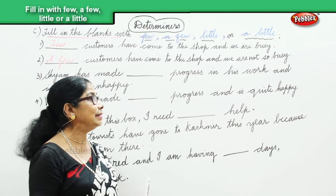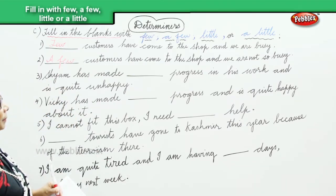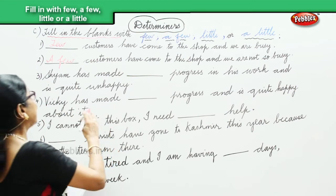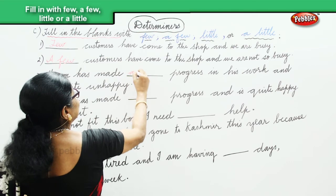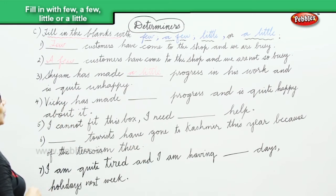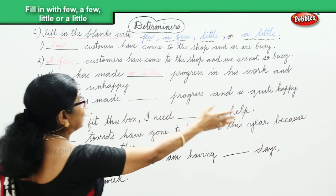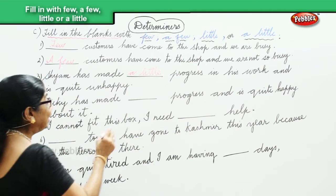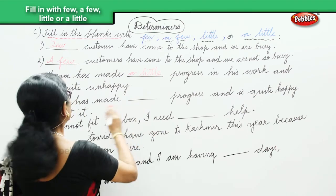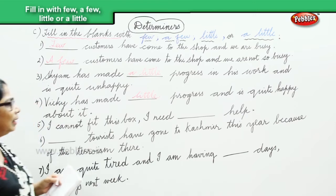Sham has made a little progress in his work and is quite unhappy. A little means at least some — he could have done more. Vicky has made little progress and is quite happy about it. Little means hardly any — just a little bit.